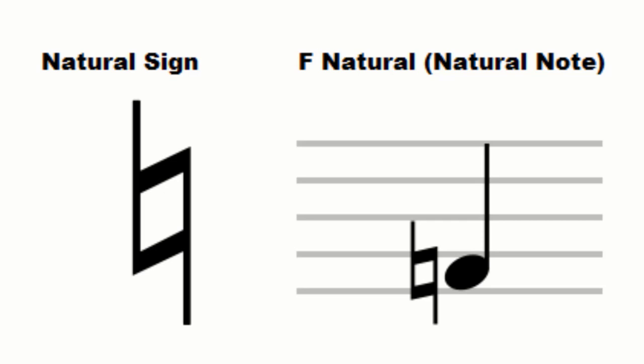For example, if a previous note in a piece of music is B flat, when a natural symbol precedes the new note, the note B must be played. In this case, the natural sign cancels the flat.